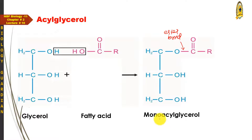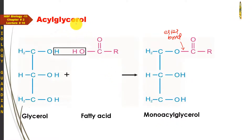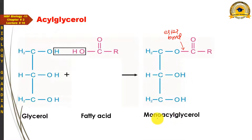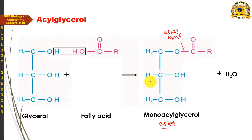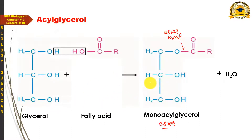Glycerol اور ایک fatty acid کے اس ester کو mono acylglycerol کہا جاتا ہے۔ Mono acylglycerol is basically the ester of glycerol and one fatty acid، اور اس reaction میں ایک water molecule بھی release ہوتا ہے۔ اگر reverse reaction draw کریں تو mono acylglycerol میں water add کرنے سے یہ glycerol اور fatty acid میں split ہو جاتا ہے — یہ hydrolysis reaction ہے۔